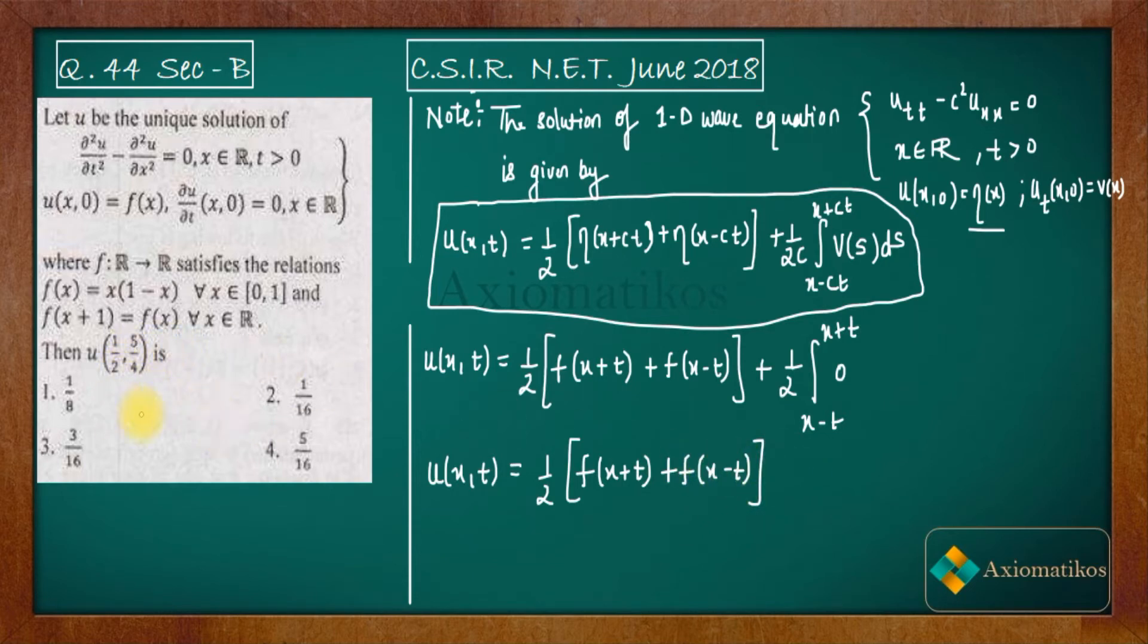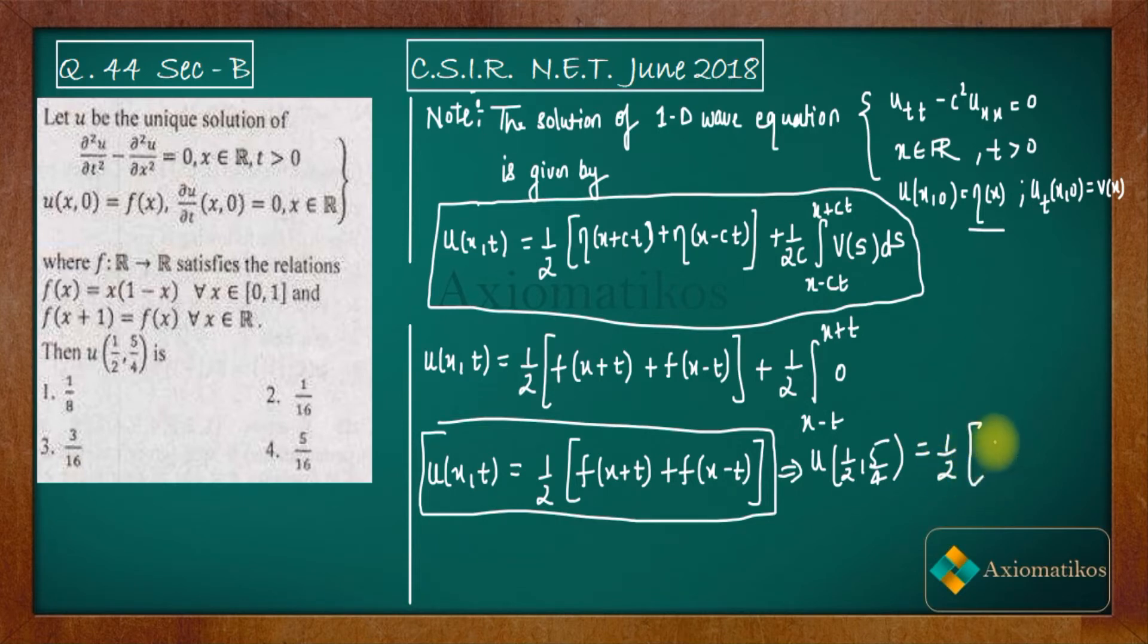So what we have to find out? We have to find out 1/2, 5/4. So if you will write, this is our solution. Let us highlight it. This is our solution. So u of 1/2, 5/4 if you will find it out you will get 1/2 times f of 7/4 plus f of minus 3/4.